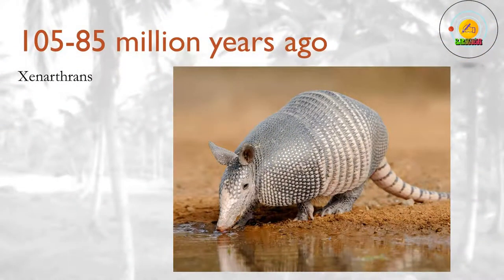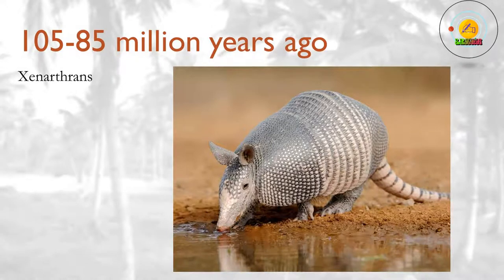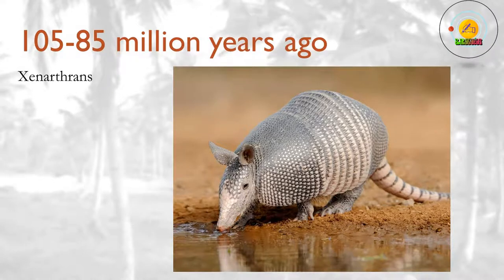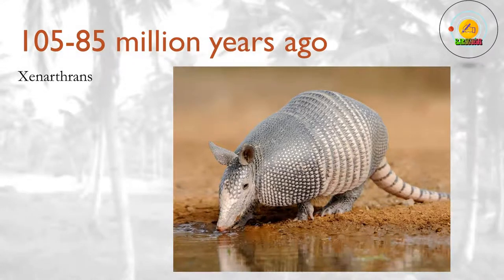105 to 85 million years ago. The placental mammals split into their four major groups: the Laurasiatheria — a hugely diverse group including all the hoofed mammals, whales, bats, and dogs; Euarchontoglires — primates, rodents and others; Xenarthra — including anteaters and armadillos; and Afrotheria — elephants, aardvarks and others. Quite how these splits occurred is unclear at present.